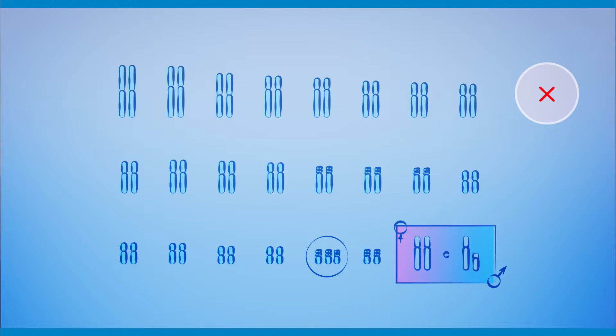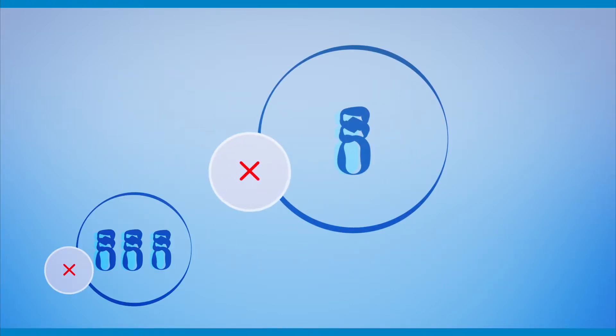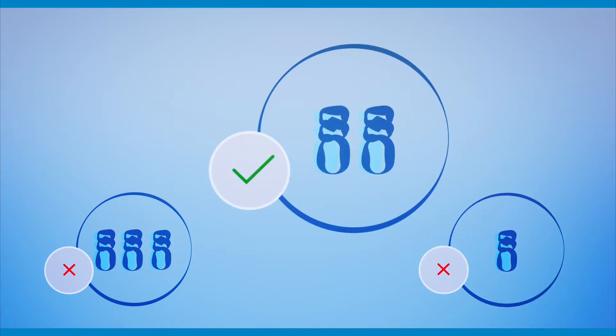Embryos without the correct count of chromosomes make it difficult for the pregnancy to occur and develop successfully. It is very important to identify embryos with the correct number of chromosomes for successful fertility treatment.